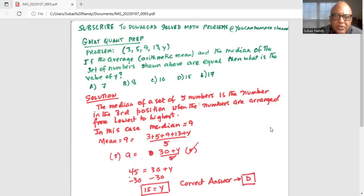So they have given us a set of five numbers: 3, 5, 9, 13, and the last number Y is unknown. If the average arithmetic mean and the median of the set of numbers shown above are equal, then what is the value of Y? And there are five options as usual.